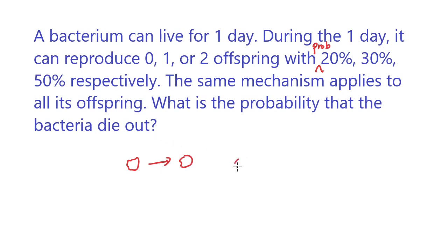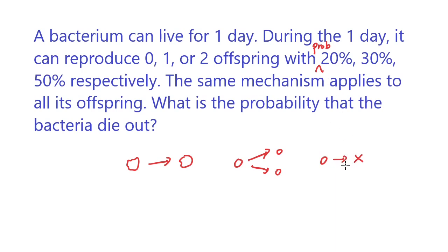A bacterium can reproduce to one offspring and die, or reproduce to two offspring and die, or not reproduce at all. This keeps going — the offspring can reproduce again and so on forever. But there is a chance it will die out because some offspring won't reproduce, since there's a 20% chance of producing zero offspring. If you try to draw out all the possibilities, it's actually quite hard. The key here is to use a recursive probability to think about this problem.